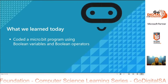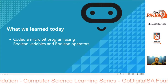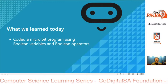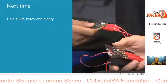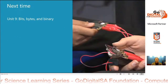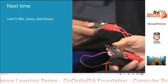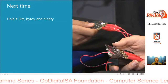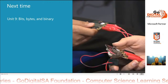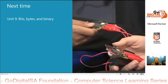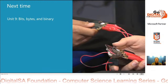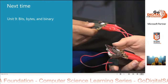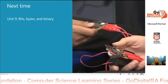So what we've learned: we've coded a micro:bit program using Boolean variables and Boolean operators. Next time, we'll be looking at unit 9: bits, bytes, and binary. That's all for today — see you next time.